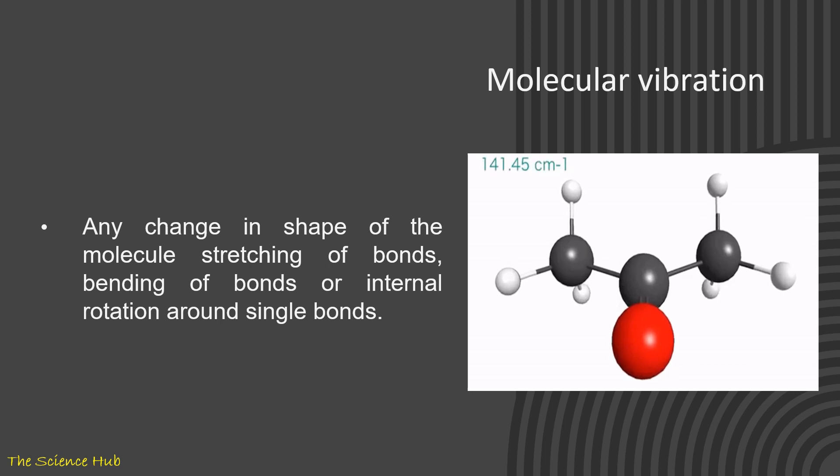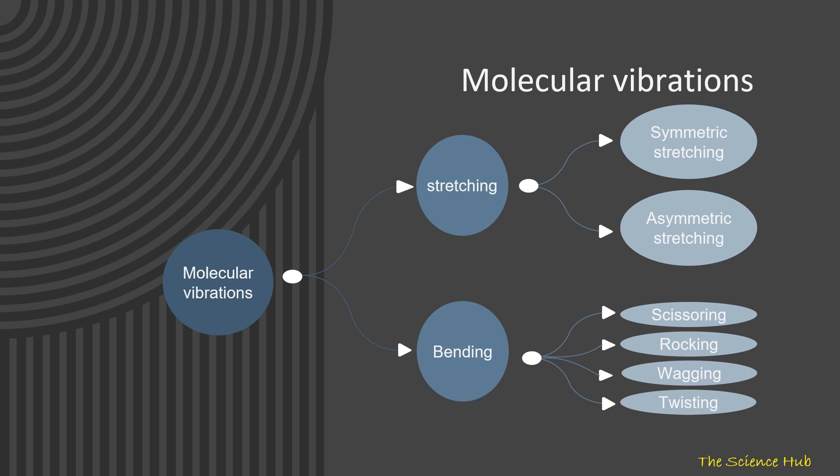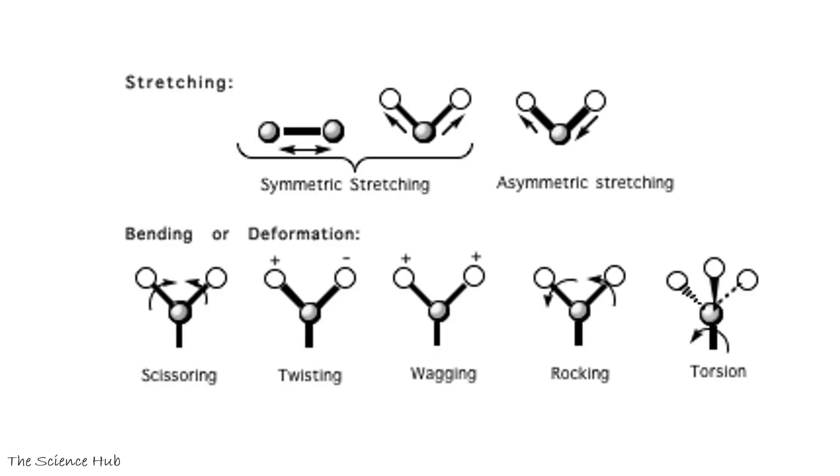Any change in shape of the molecule—stretching of bonds, bending of bonds, or internal rotation around single bond—turns to molecular vibration. There are generally two types of molecular vibrations: stretching and bending. This is a classification of molecular vibrations which we can observe in IR spectroscopy. Stretching can further be classified into symmetric stretching and asymmetric stretching, and bending includes scissoring, rocking, wagging, and twisting. Here this illustration will help you easily understand the different types of stretching and bending which take place in IR spectroscopy.